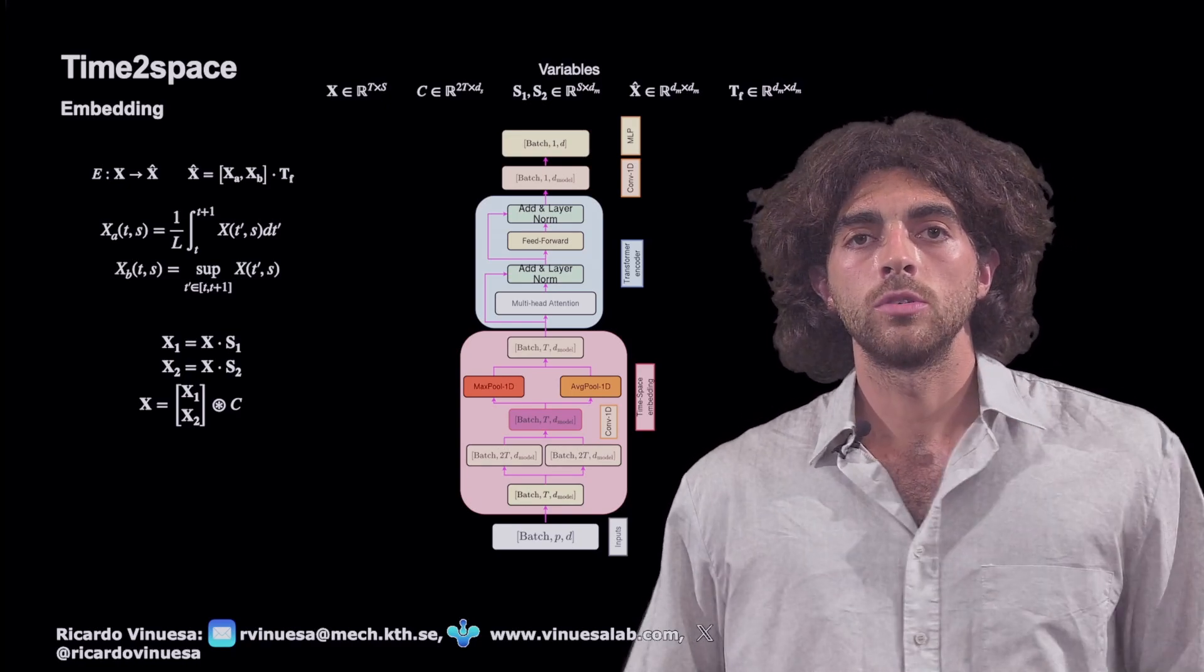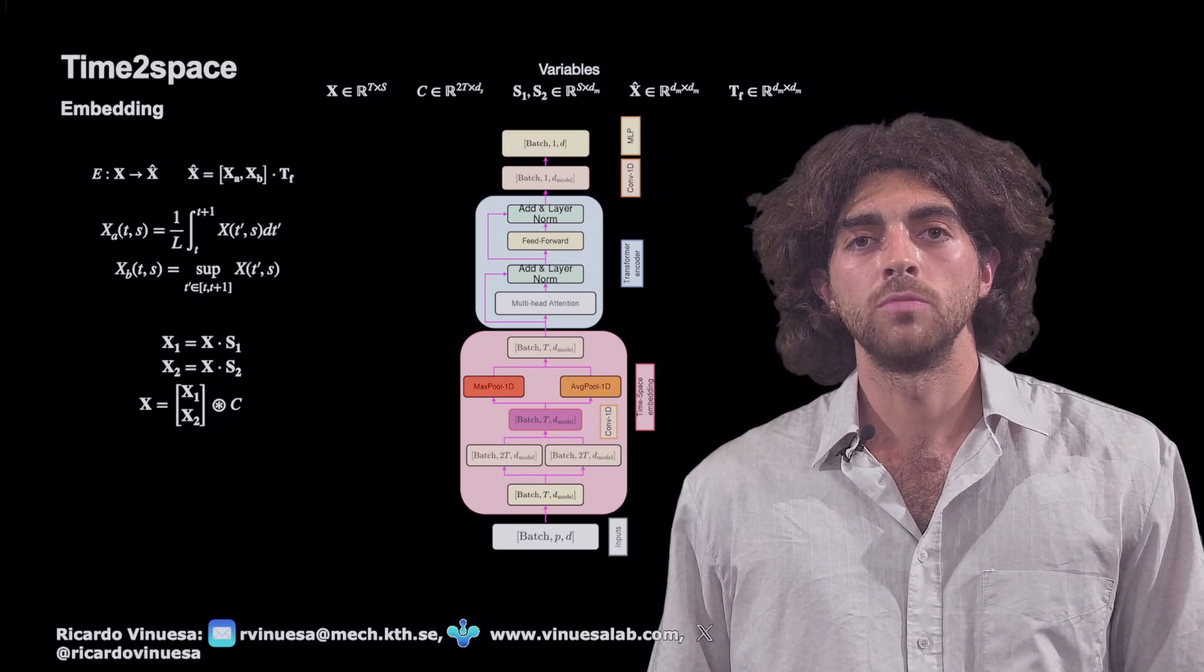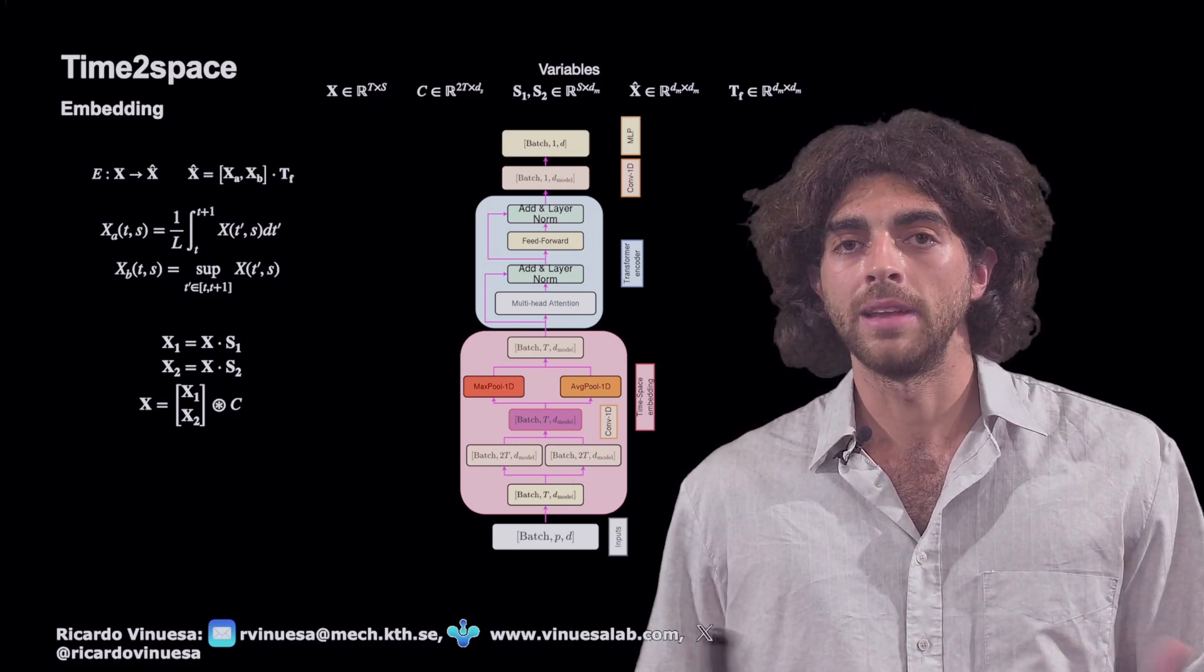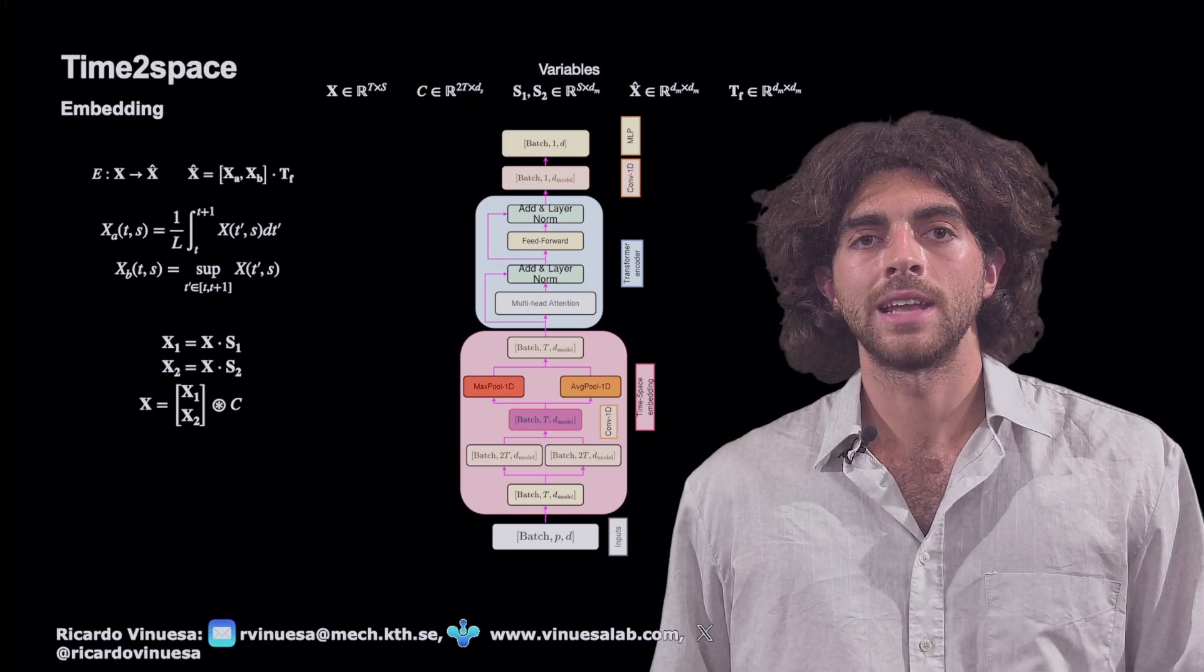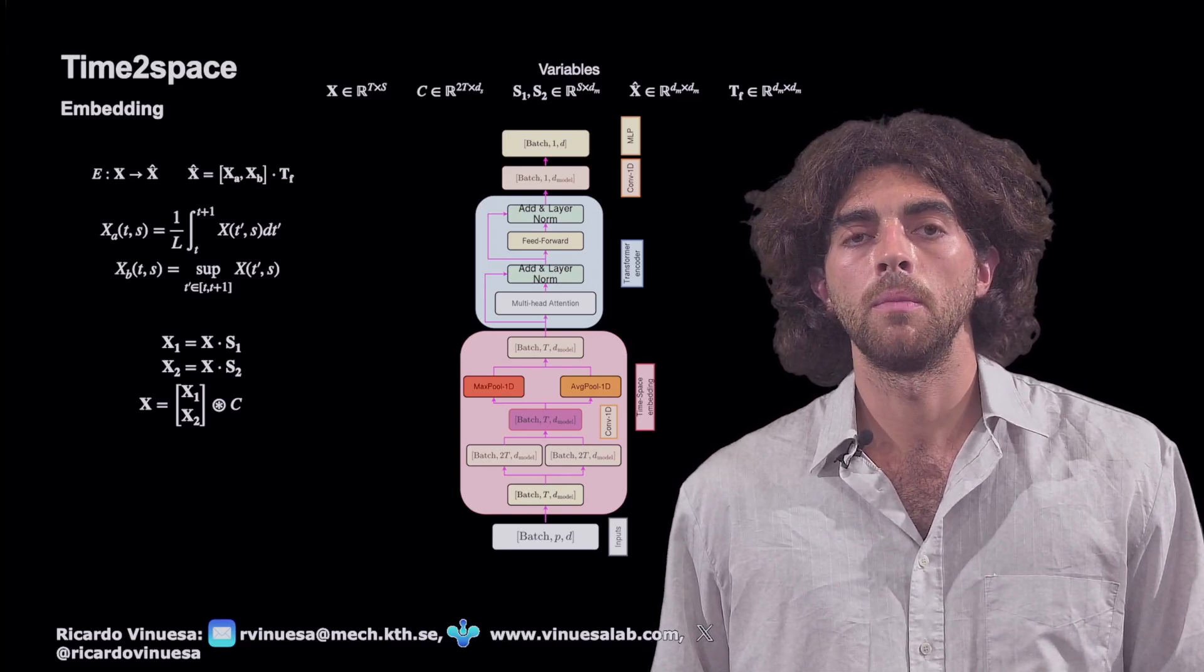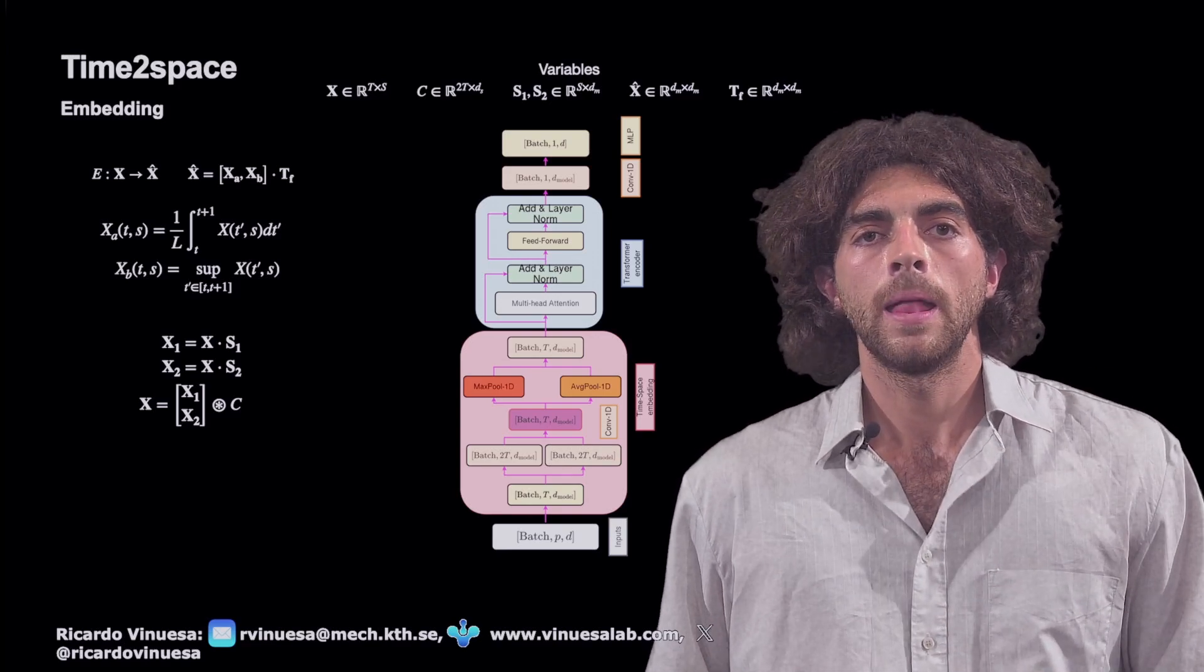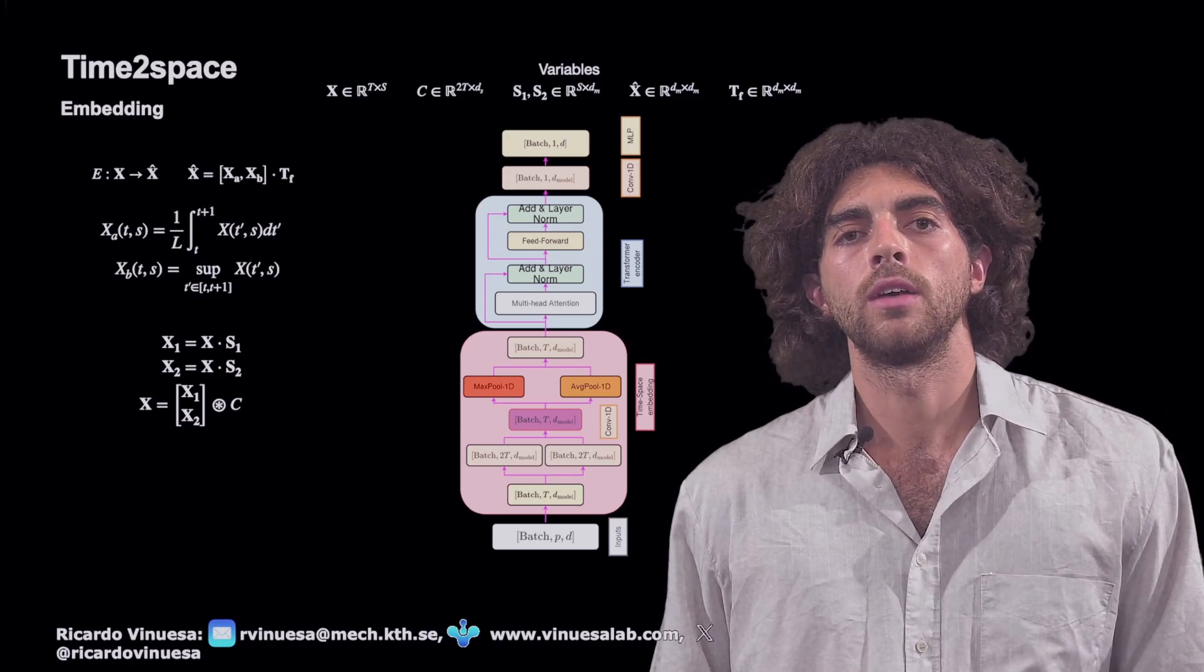We have the S1 and S2 matrices that are just linear multiplications, and after we have a convolution matrix that is the last step in the process. I'm going to go through it now through the whole embedding procedure.